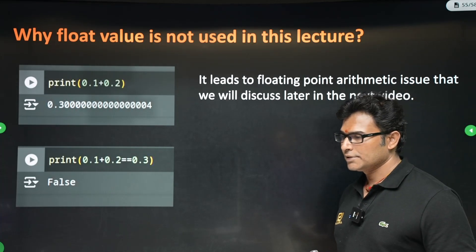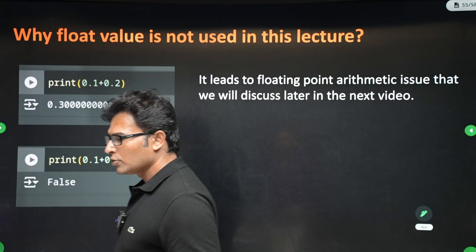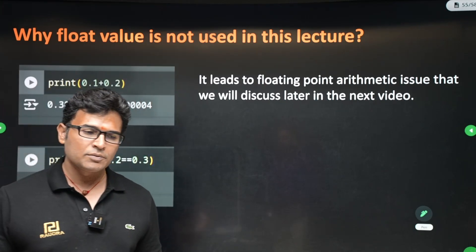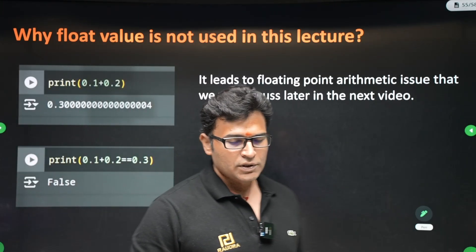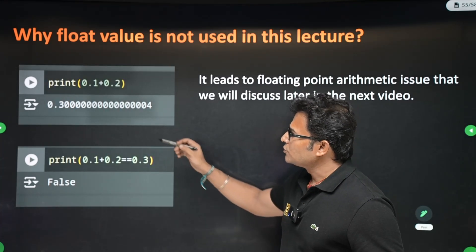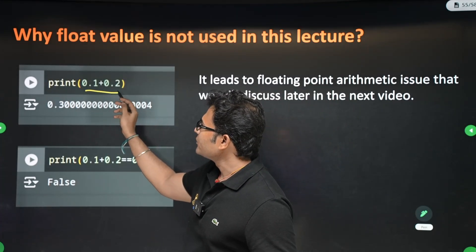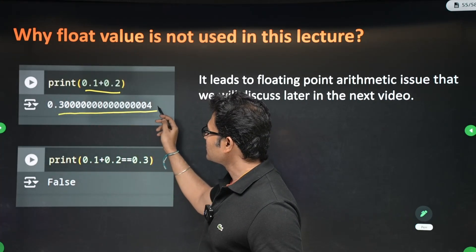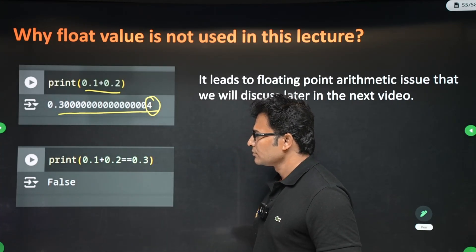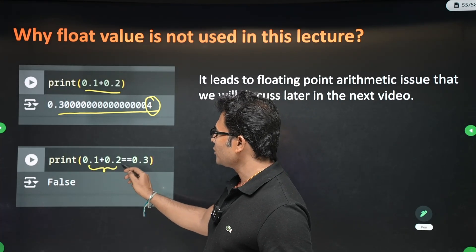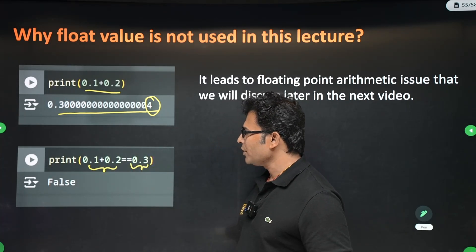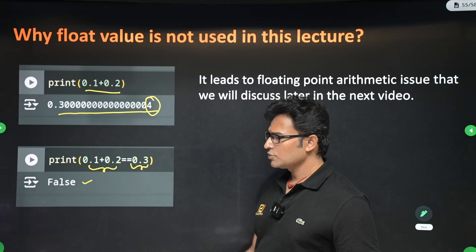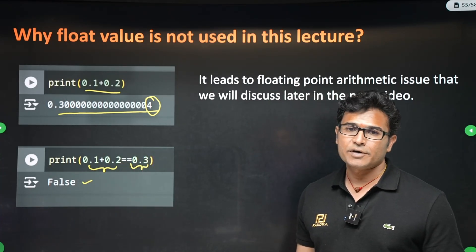I didn't cover floating point numbers because they behave a bit differently. For example, 0.1 plus 0.2 should be 0.3, but the result has some unexpected digits at the end, and checking whether 0.1 plus 0.2 equals 0.3 will return false. Floating point numbers will be covered in a separate lecture.